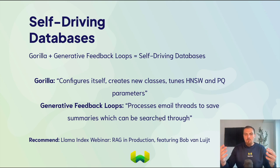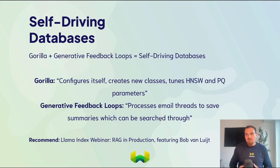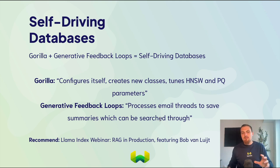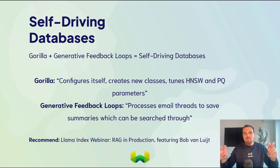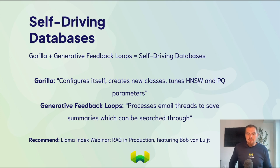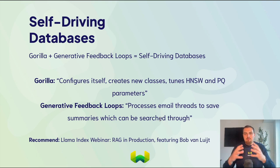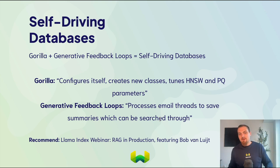On one side we have generative feedback loops — transforming data because the new representation might be better for search. If you have podcast clips and summarize content into abstract descriptions of what was discussed, that'll be a better search index. On the other side we have Gorilla. What we're thinking about with Weaviate Gorilla — and there'll be a blog post soon — is where Gorilla can configure itself, create new classes, maybe even tune product quantization parameters. Andy Pavlo, a brilliant database professor at Carnegie Mellon, calls this self-driving databases — databases that automatically optimize their index structures.